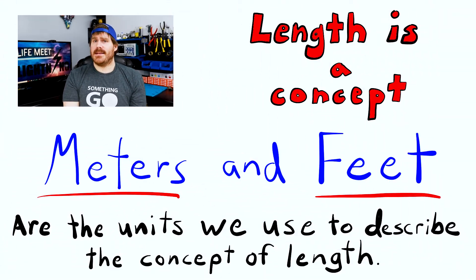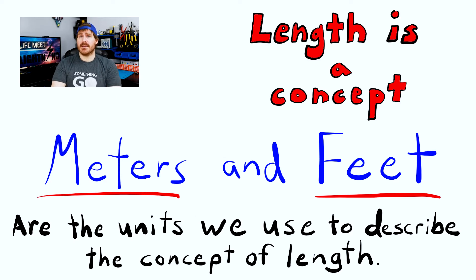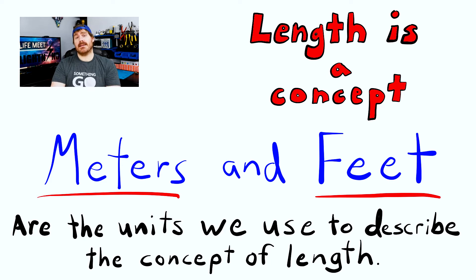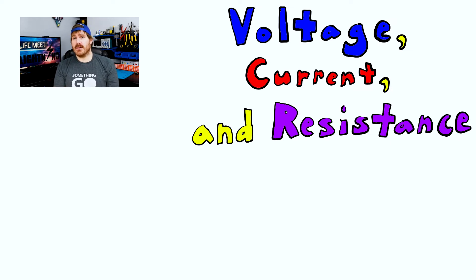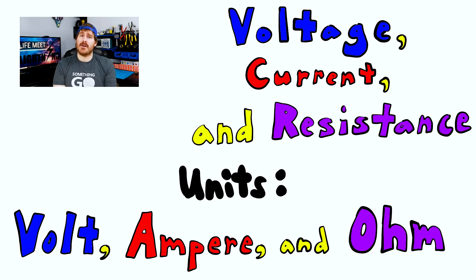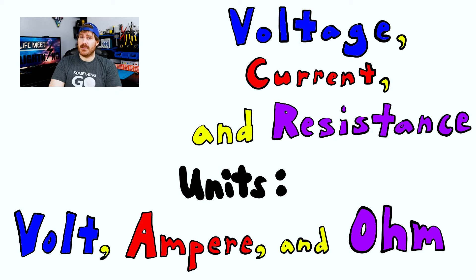We talked about length earlier. Length is a concept — it's a distance. Meters and feet are the units of measurement that we use to describe the concept of distance. In the same way, in electronics we have the concepts of voltage, current, and resistance, and the units we use to describe measurable quantities of those concepts are the volt, ampere, and ohm.